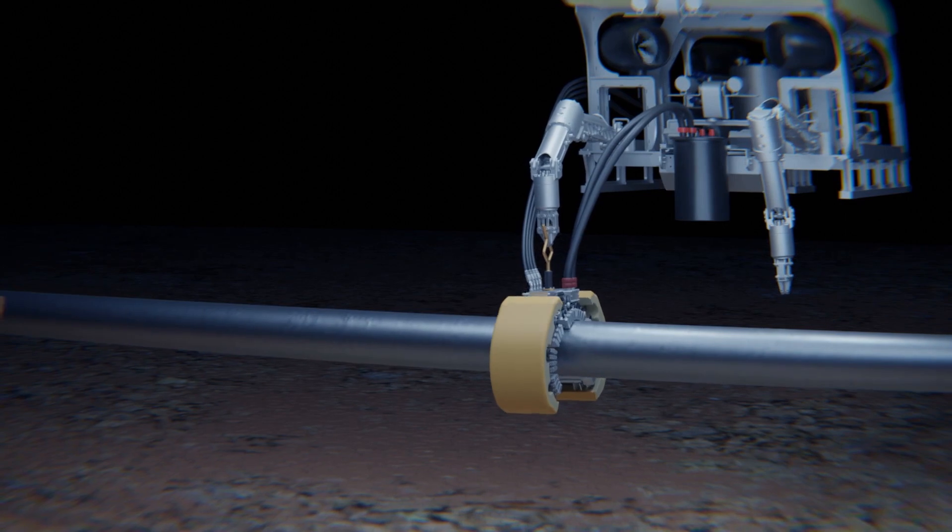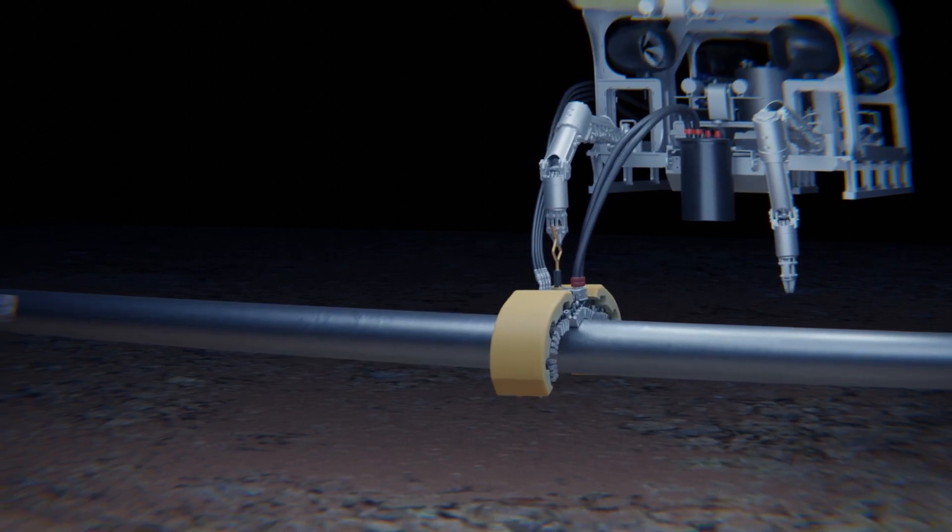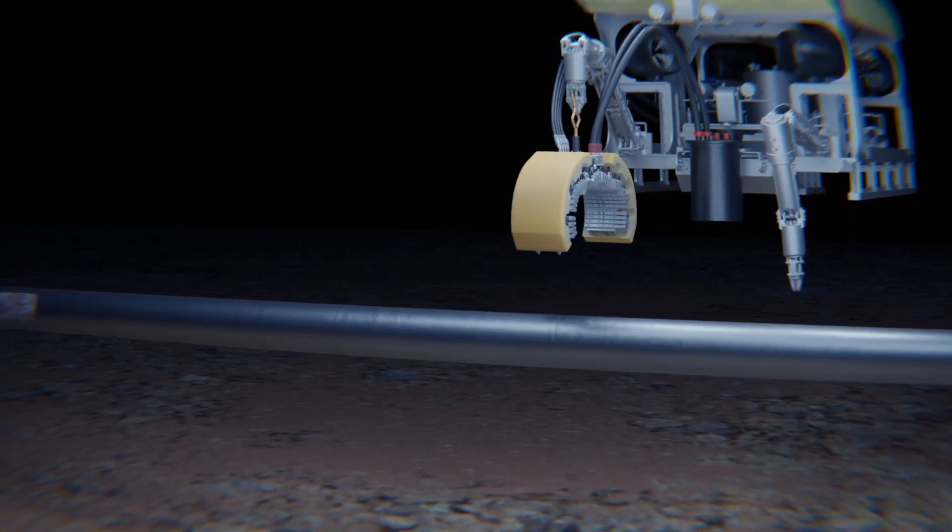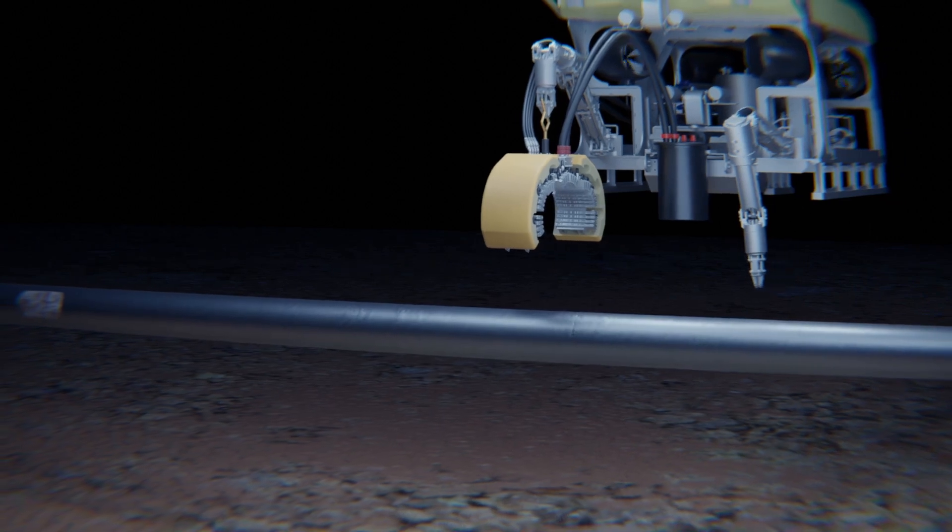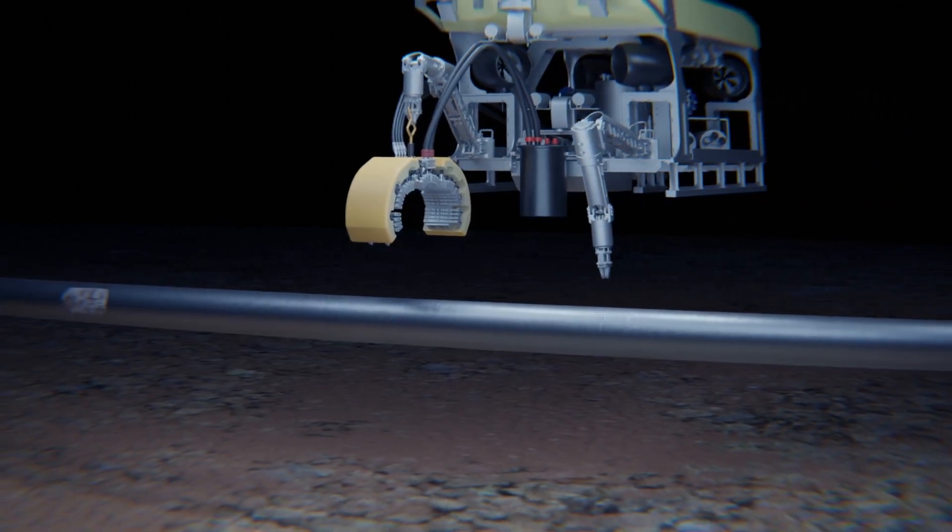Once a defect has been detected, the clamp is repositioned at the point of the flaw. Then, ultrasonic normal probe array scanning is used to get a detailed characterization of it.